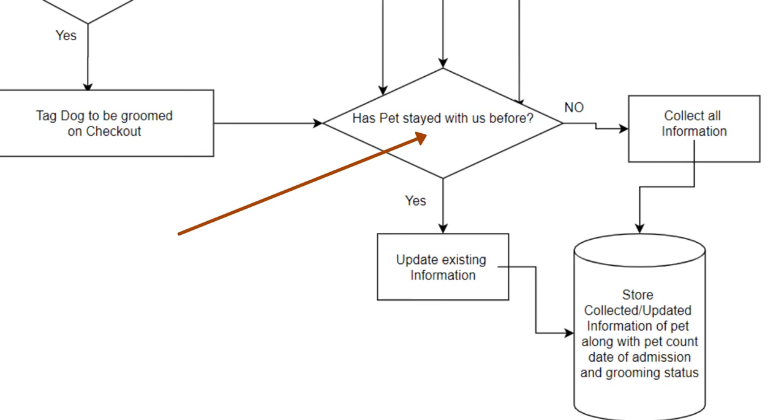Has pet stayed with us before? So you have the arrows coming down. One from the cat. One from the decision if dog is less than two days. And then one from if they decide no to grooming. So now we're at our last decision. Has pet stayed with us before?